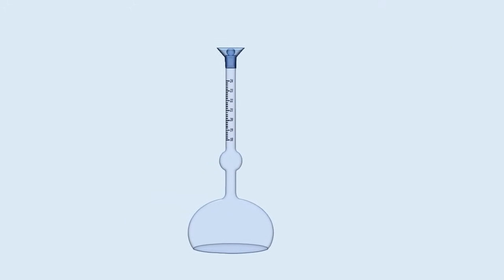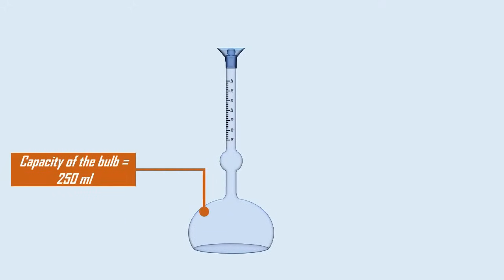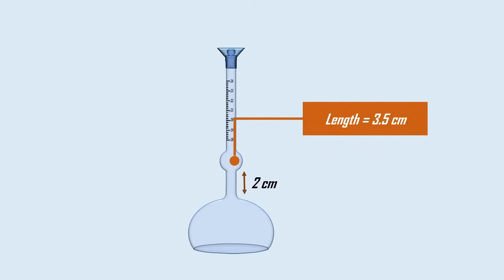The Le Chatelier flask is made of thin glass with a bulb at the bottom. The capacity of the bulb is nearly 250 ml with a diameter of 7.8 cm. At 2 cm from the zero, there is another bulb of 3.5 cm in length and a capacity of 17 ml.